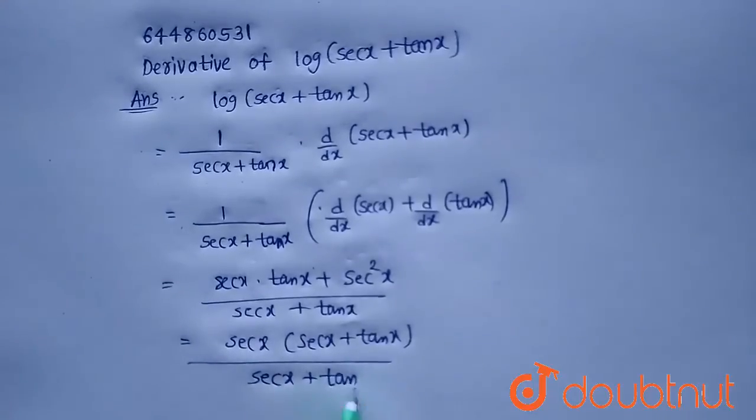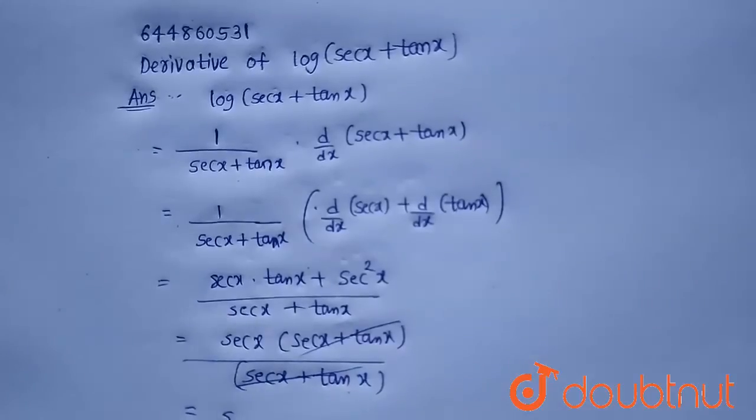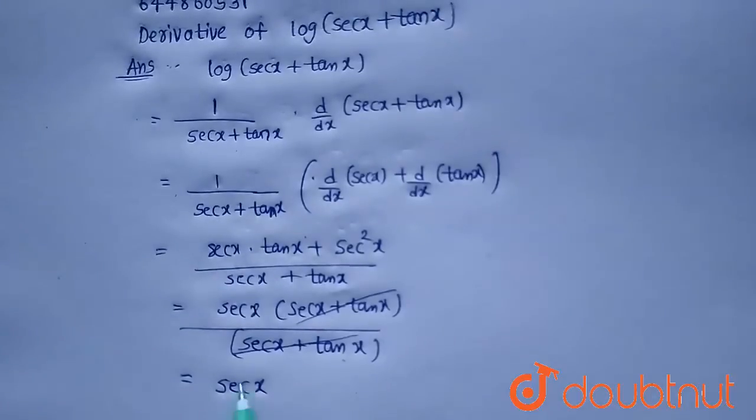Now this secant x plus tan x, this secant x plus tan x will get cancelled and we will get secant x. So the derivative of log of secant x plus tan x will be secant x.